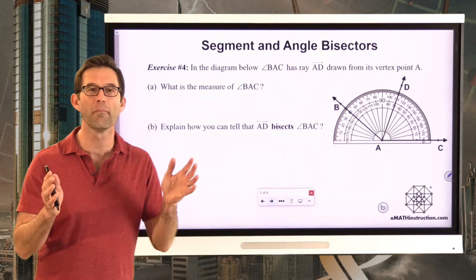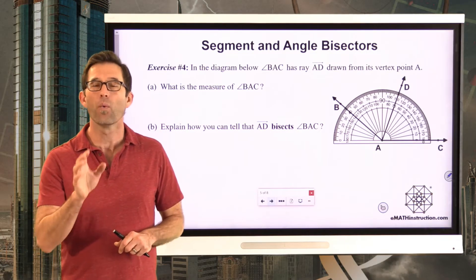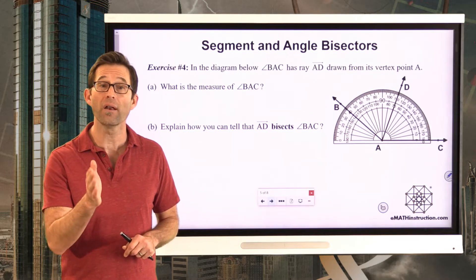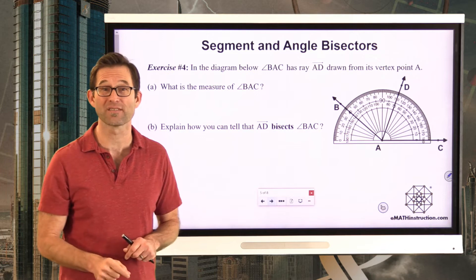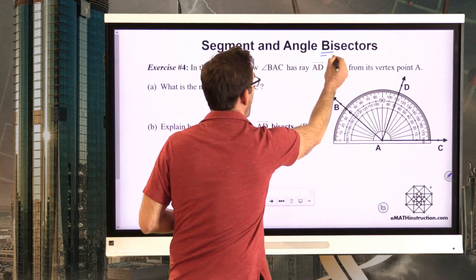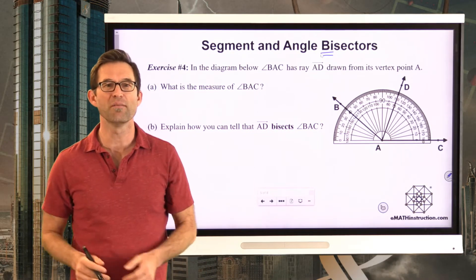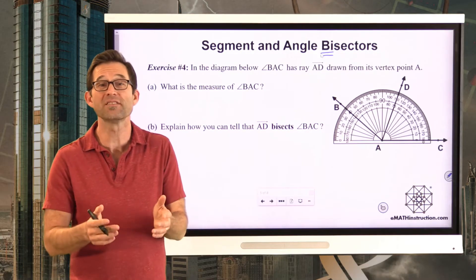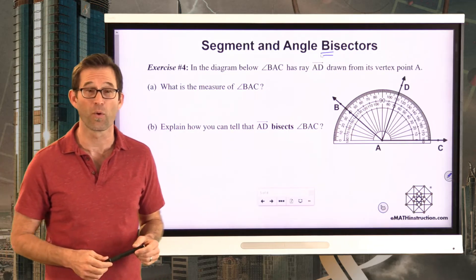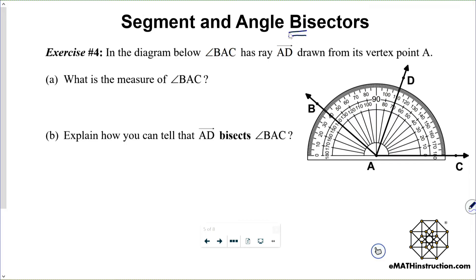Anyway, let's keep moving on. Segments and angle bisectors. Alright. So we can take something that's got a measure, like a segment, or an angle, and we can cut them in half with other geometric objects. And that's the idea of a bisector. A bisector is a geometric object that cuts another geometric object in half, or at least it cuts it into two portions that have equal measures. So let's take a look at exercise number four. In the diagram below, angle BAC and ray AD drawn from its vertex point A. Letter A, what is the measure of angle BAC?